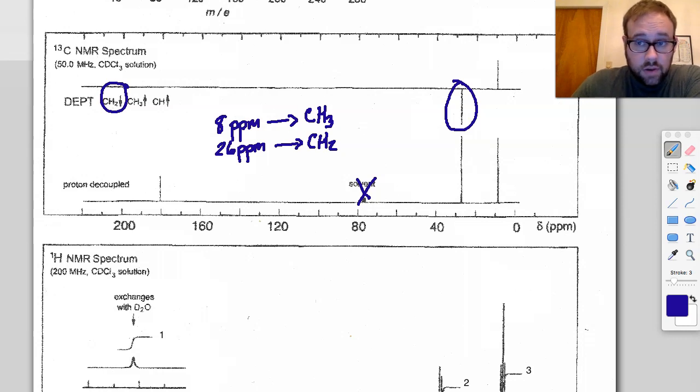This should be our carbonyl because we definitely have a carbonyl based on IR evidence, and sure enough, anything north of about 160, 165 is going to be carbonyl. A carboxylic acid is going to hang out right around 180, 185, and sure enough this looks like it's just a hair over 180, so maybe we'll call that 181 ppm, pretty far downfield. This is confirmation of a carbonyl group, most likely a carboxylic acid.